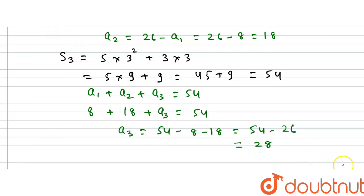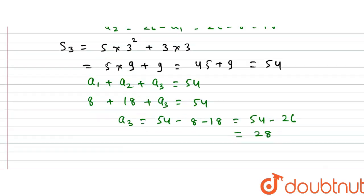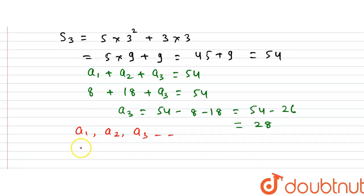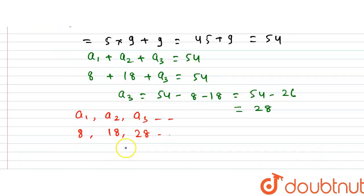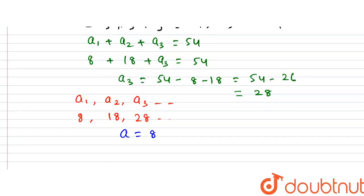Now we can easily identify the AP. The AP is: a1, a2, a3, ... which is 8, 18, 28, and so on. The first term a = 8, and the common difference d = 18 − 8 = 10.